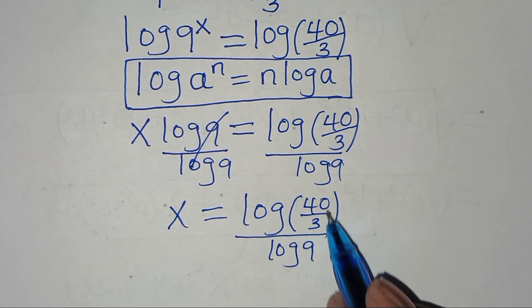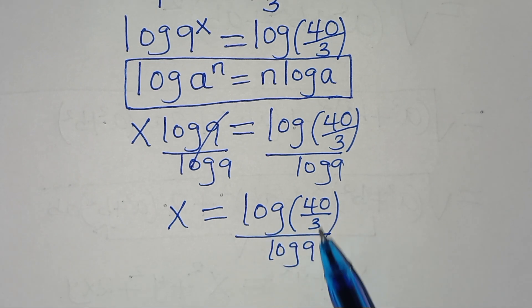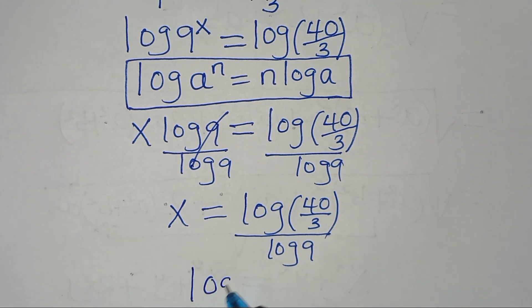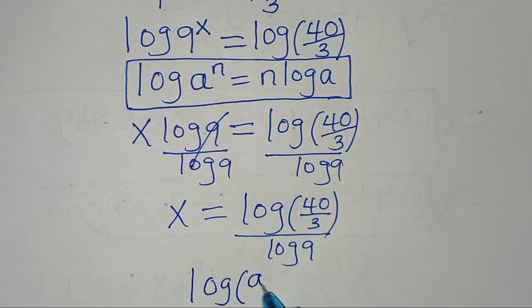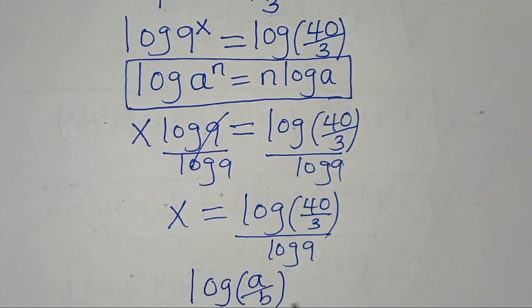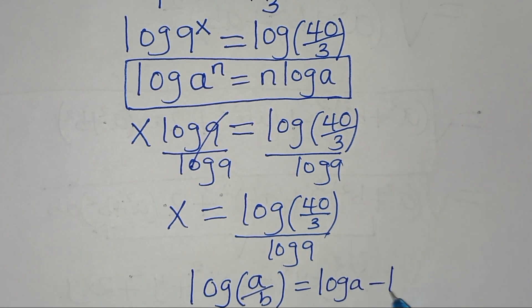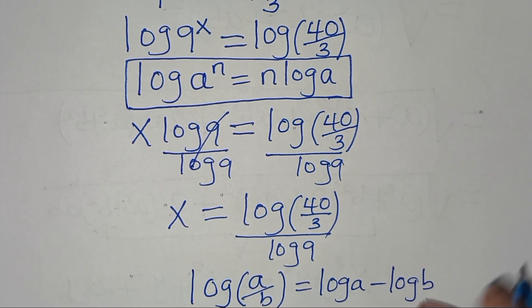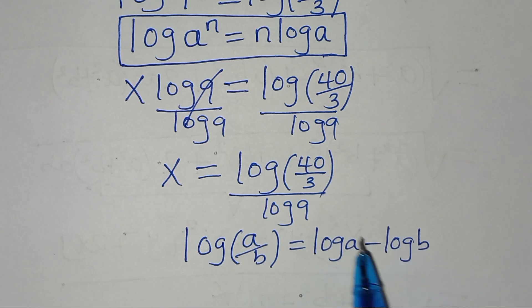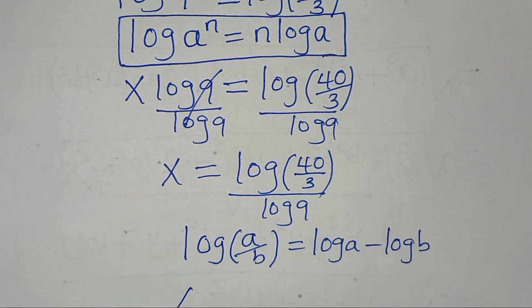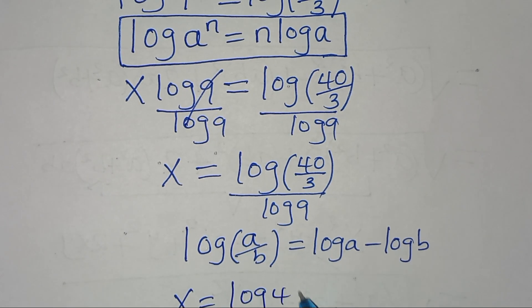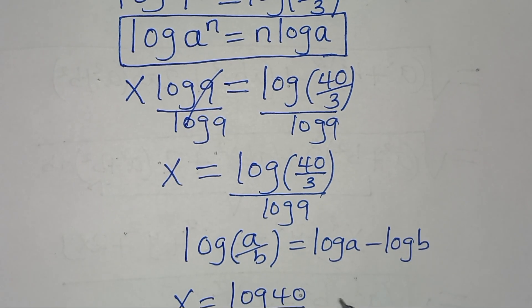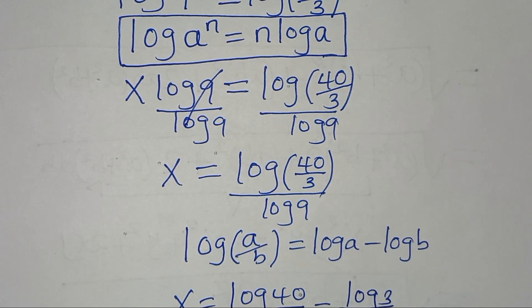The next step: log of 40 over 3 is in the form of log of a divided by b, which we can express as log a minus log b. Applying this logarithm quotient property, we have x equal to log 40 over log 9, minus log 3 divided by log 9.